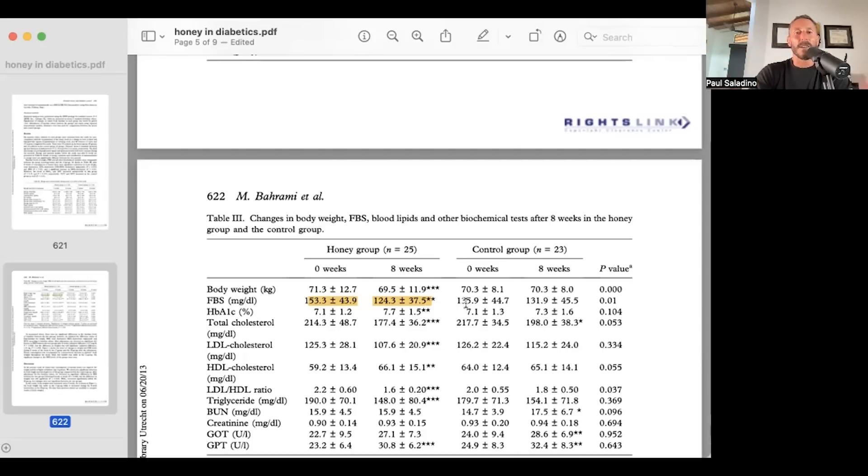Imagine what would have happened if we removed the seed oils from these people's diets. Now, interestingly, the control group went from 7.1 to 7.3. So even the control group increased their hemoglobin A1C. If you want to know the average blood sugar conversions, 7.1, which is where both groups started, is about 157 milligrams per deciliter. At the end of the study, the control group was at 163 average blood sugar, and the honey group was at 174.